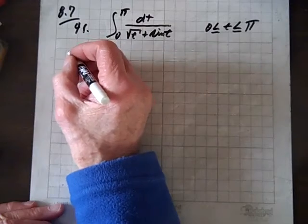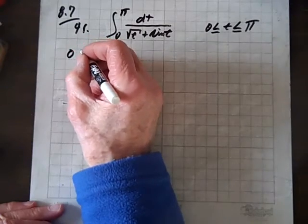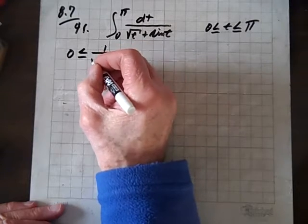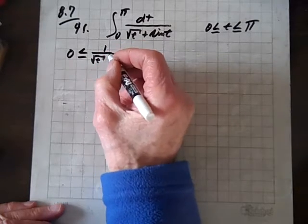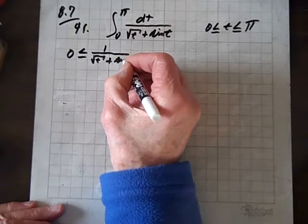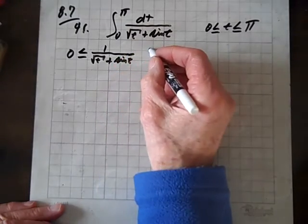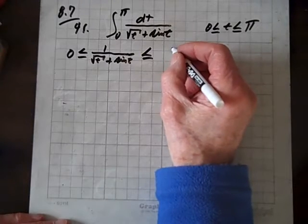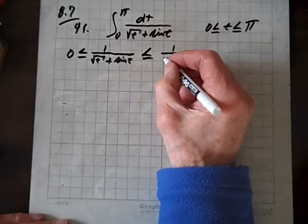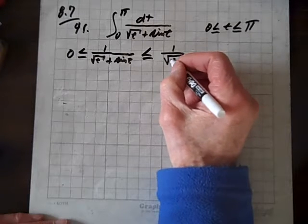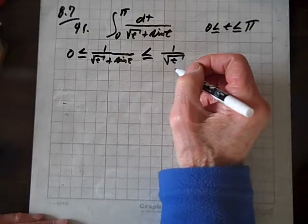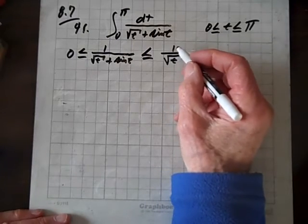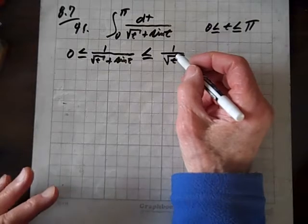So let's use the direct comparison test. We know that 0 is less than or equal to 1 over root t plus sine of t, and that's less than or equal to 1 over root t, and what we're going to compare it to is this. We know that the integral of this converges.